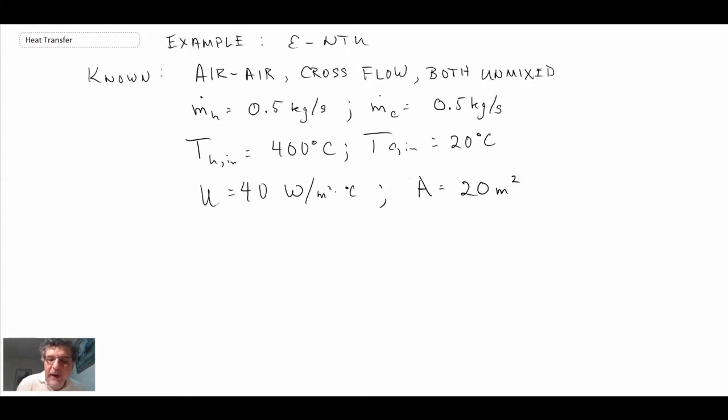We know that we're dealing with an air-to-air cross flow heat exchanger, both fluids unmixed. Mass flow rates for both streams are identical at 0.5 kilograms per second. The hot air flow coming in is at 400 degrees C, whereas the cool air flow coming in is at 20 degrees C.